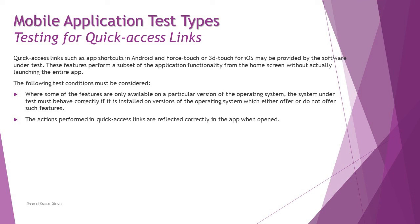The following test conditions must be considered when testing quick access links with device software interaction. Some features are only available on a particular version of the operating system, so the system under test must behave correctly whether installed on versions that offer or do not offer such features. If there are limitations on features, those limited features must be tested to confirm unavailable ones are blocked, while the full version must be verified to ensure all user interactions are in place.